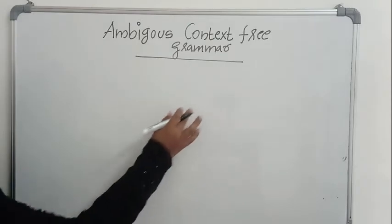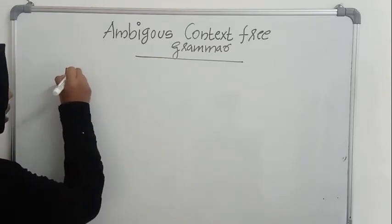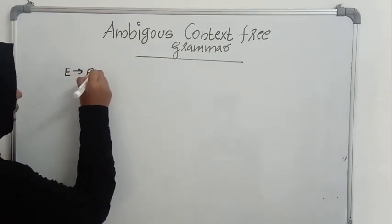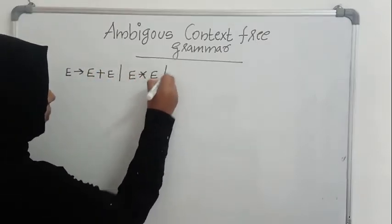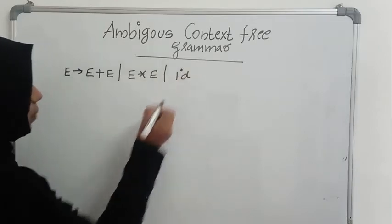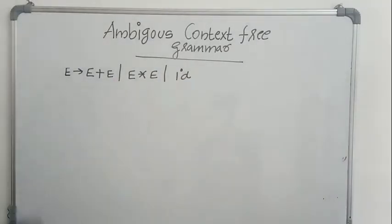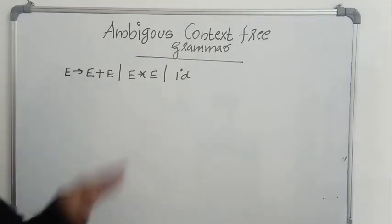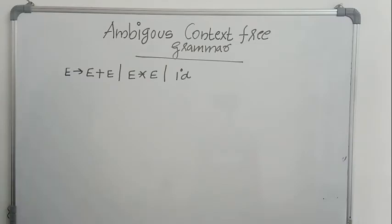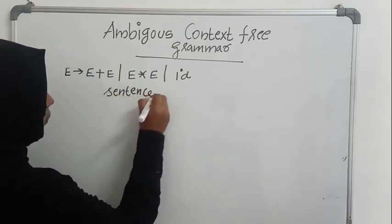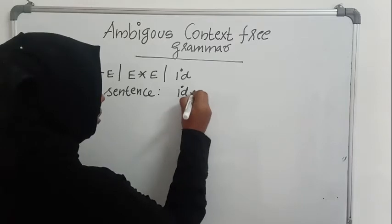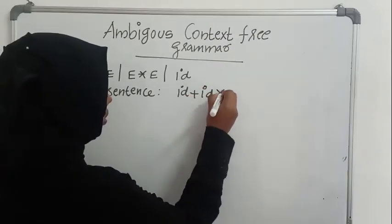For example, we will see the same grammar discussed in the previous video: E gives E plus E, E gives E star E, E gives id. This is basically a grammar for arithmetic expressions — plus, star, and everything is here. You can expand it using E gives E star E, E by E, E minus E, E in brackets, and so on. From this we will derive the sentence id plus id star id.